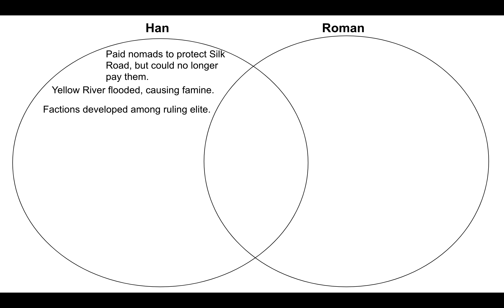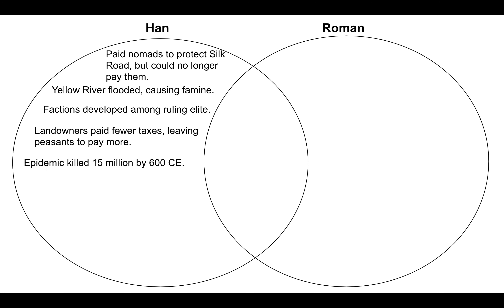We know that different groups, different factions emerged between the ruling elite in the Han Dynasty. When factions develop in your government, it makes the government less stable, so that helped lead to its decline. The landowners were paying fewer taxes, and that meant that the peasants had to make up the difference — they were not happy about that. That's one of the reasons why they revolted. In fact, remember from the Han video, a lot of the peasants would hide from the tax collectors, so the government's not taking in enough money, which means they can't function.